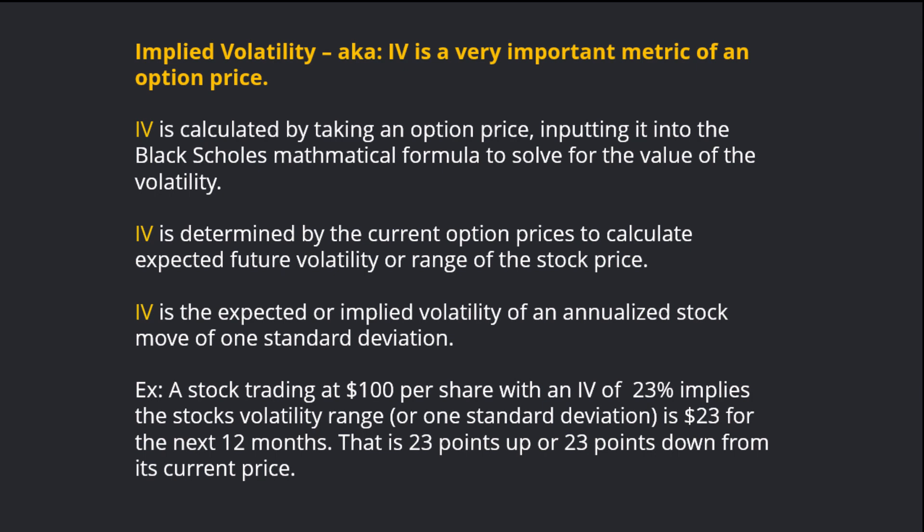IV is calculated by taking an option price and putting it into the Black-Scholes mathematical formula to solve for the value of the volatility. IV is determined by the current option prices to calculate expected future volatility or range for the stock price.